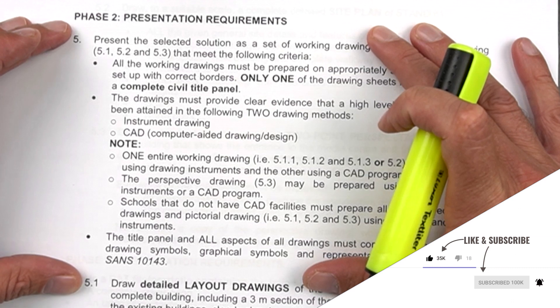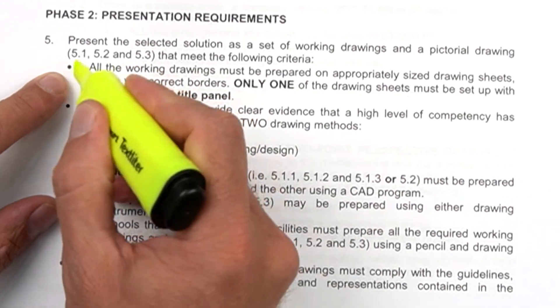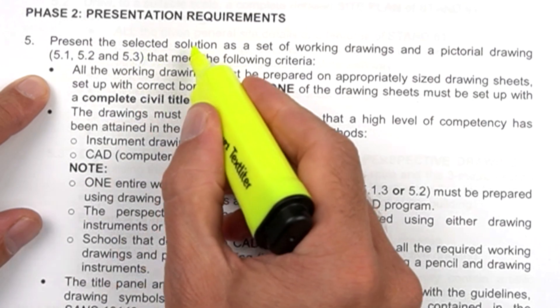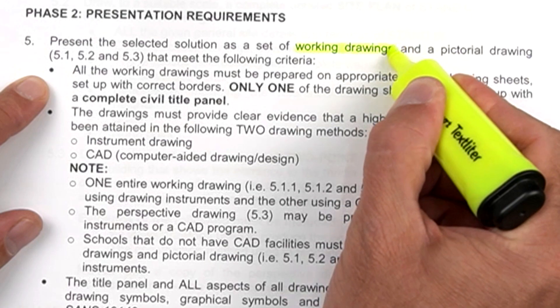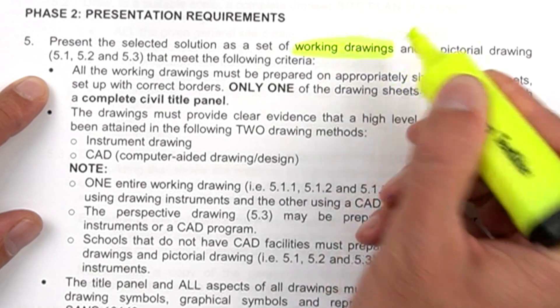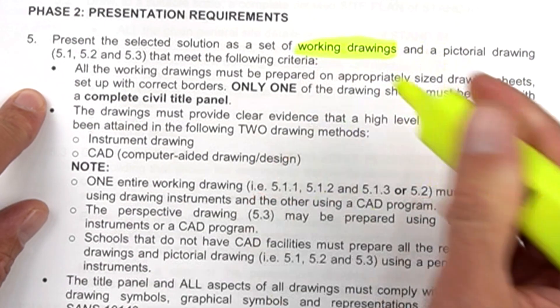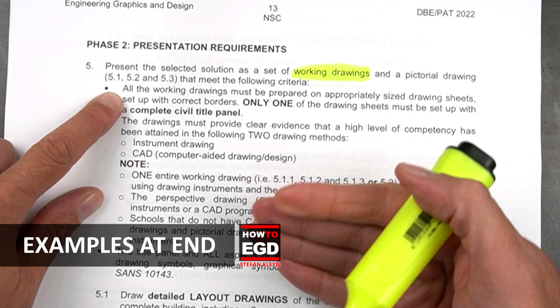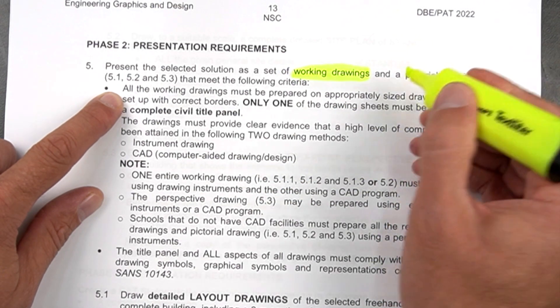In this video, starting on page 13 of your EGD PAT civil document, what you need to do is present the selected solution as a set of working drawings. Working drawings refers to the drawings that a builder or contractor will use to actually build the building. It needs to be at a standard where someone will be able to interpret your drawing and actually build the building you've proposed.